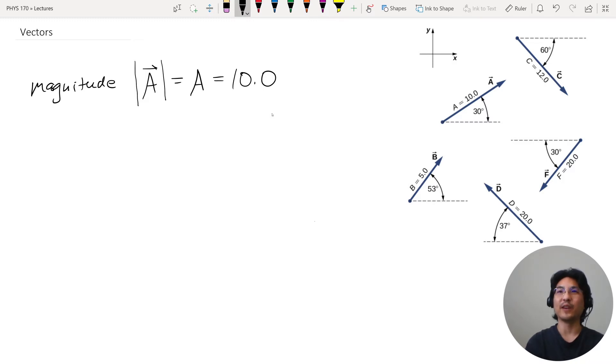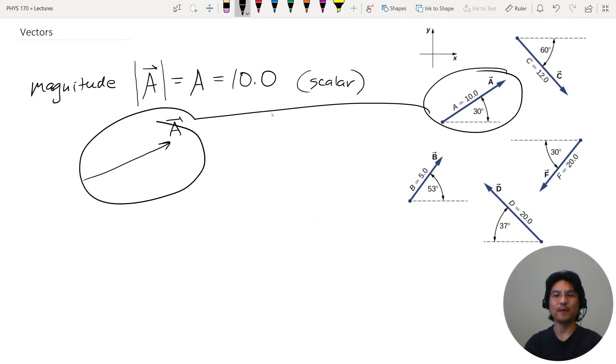You can also scale vectors. So you can multiply a vector by a scalar. This is a scalar, it's a magnitude without direction. You can multiply a vector by a scalar. For example, let's say you have vector A over here. You can pick this up and move it in space. It's the same vector as long as you don't change the magnitude or the direction.